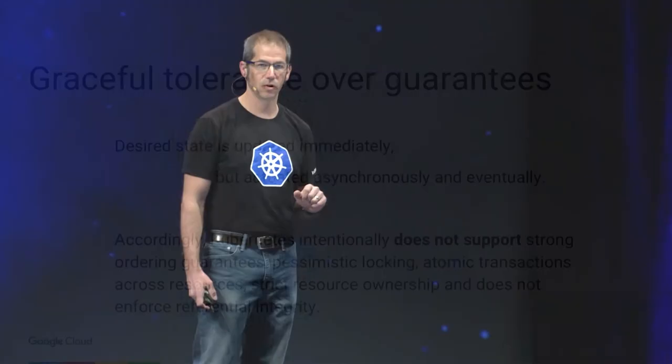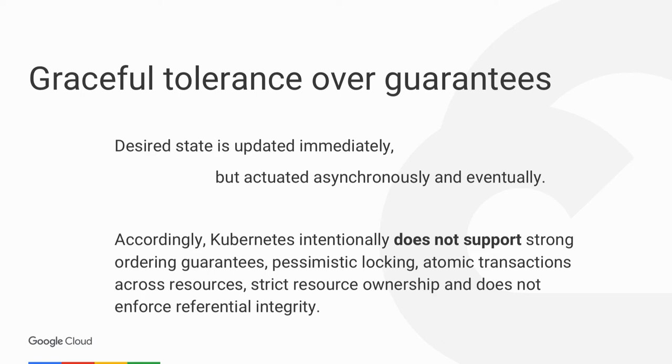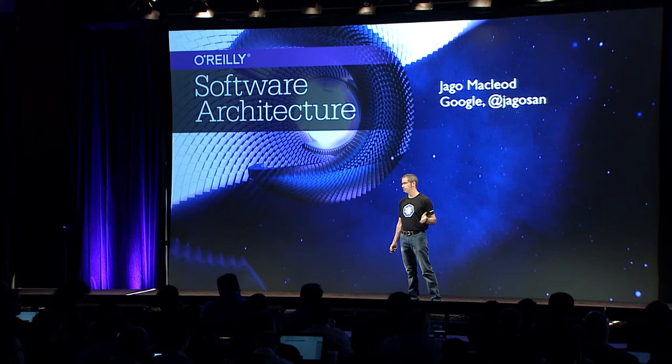Resources are never assumed to have a single exclusive owner. There is role-based access control and ways to restrict access, but the resource itself is not owned by a specific owner. And there's no strong ordering guarantees or transactions across multiple resources. There's graceful tolerance over these strong guarantees. Distributed systems — we've learned over the years that this just is a better model. We unapologetically assume there are trade-offs: no strong ordering, pessimistic locking, no atomic transactions across resources, no strict resource ownership, and no referential integrity. Many folks come and try to bolt it on, and it's a bad idea.